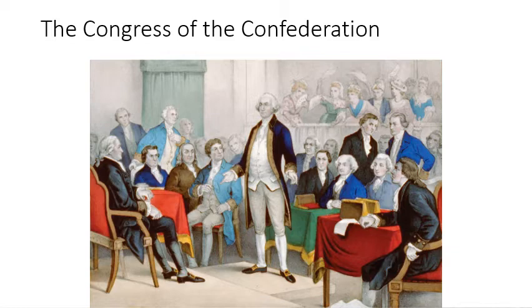Congress was the sole organ of the national government — no president, no judicial branch, no courts. There was no executive branch to enforce the laws and no national courts to interpret them. Whenever Congress decided to do something, it was basically up to each individual state to decide whether or not to go along with it, and many times they didn't. Because states were left to handle their own tax and tariff policies, they often had disputes with each other. Congress could mediate between states, but it had no power to force anybody to accept its decisions — it was essentially powerless.